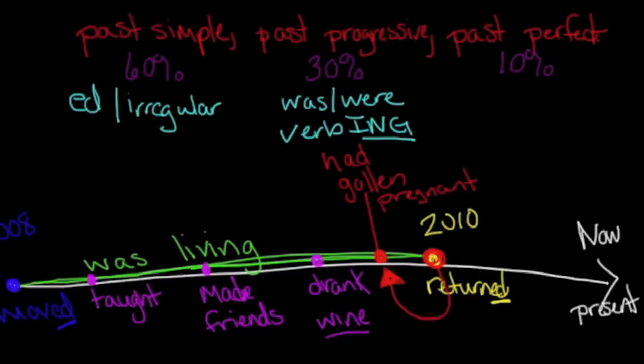While I was living in Argentina, I taught, I made friends, and I drank a lot of wine, which may have led in the end to the reason I had gotten pregnant. So you can see here, past perfect is had plus your past participle.